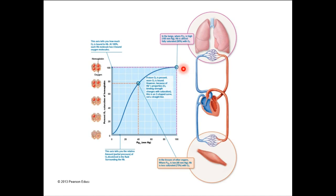The x-axis is partial pressure of oxygen — the amount of oxygen around. The y-axis is saturation of oxygen on hemoglobin. It's a direct correlation: more oxygen means more binding, and it levels off because we're reaching saturation. That's where I'm going to stop — this concept is about to get a lot more convoluted after the break.